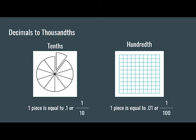Hundredths can be described as a whole divided into 100 pieces or each tenth being divided into 10 pieces. Each piece having a decimal value of 0.01 or a fraction value of 1 over 100.